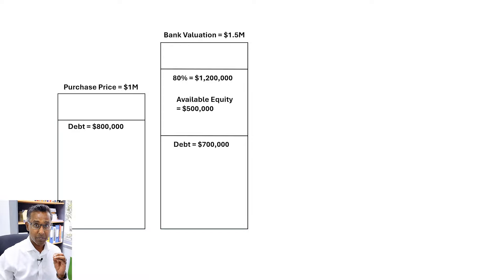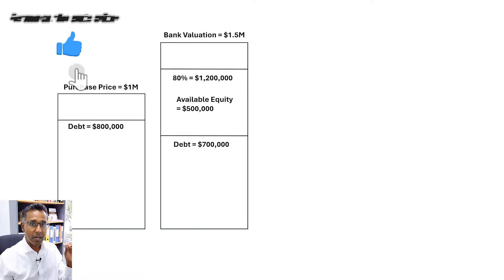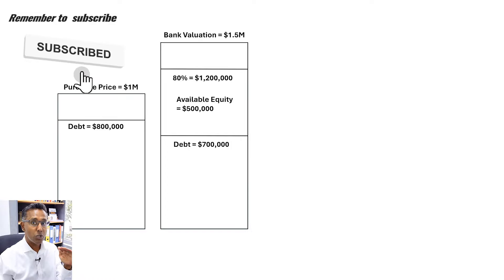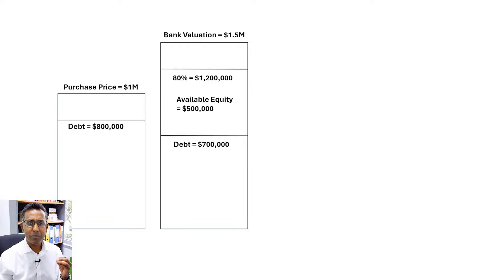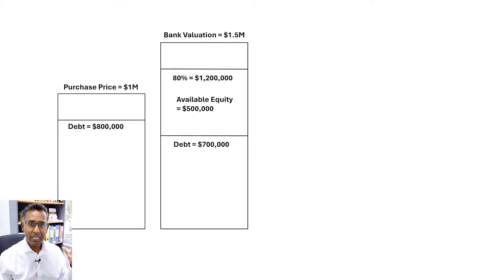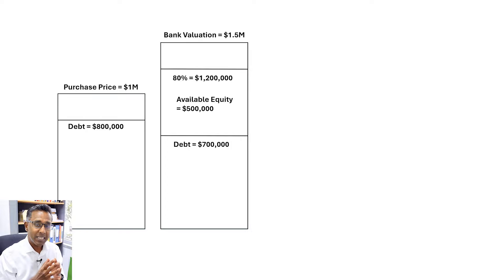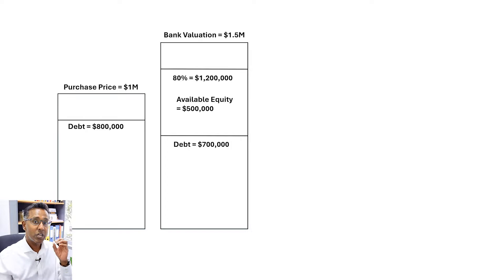Here's the second misconception: just because the numbers work out this way is no guarantee that the bank will actually give you this equity. I see so many people who say, 'I've got lots of equity, so I'm sure the bank will lend me — I've got equity, isn't that all you need to buy property?' That is a second misconception.